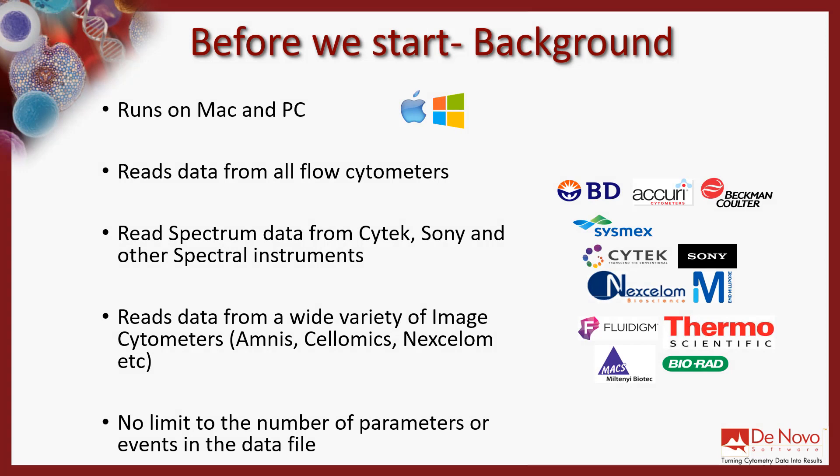Before we show you the major similarities and differences as you move from FlowJo to FCS Express, I'd like to give you some background on FCS Express. It runs on Mac and PC, runs data from all flow cytometers, including spectral data from SciTech, Sony, and other spectral instruments. FCS Express can also read a wide variety of image cytometry data, and there's no limit to the number of parameters or the events in the data files when performing analysis.